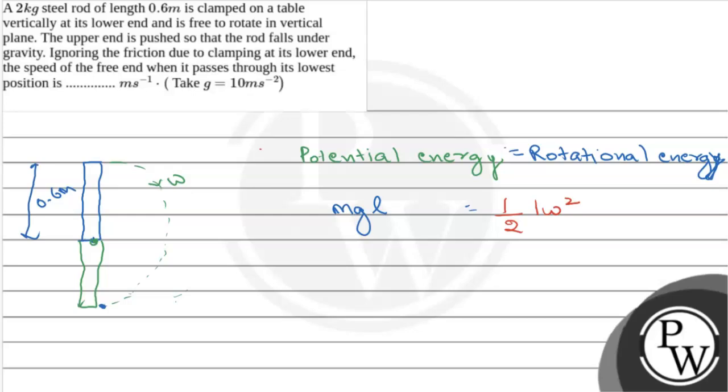Now, here I is the moment of inertia of the rod. Here, the rod is hinged at its endpoint. That is, when the rod's axis passes through its end, then the formula is ml² by 3.